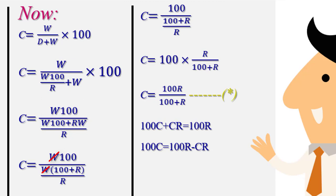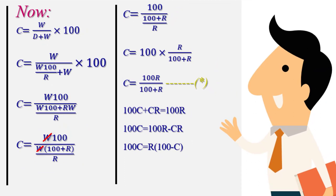Here we take R as common. 100C is equal to R. In the first bracket, 100 minus C, so R minus C equals R into that term. Therefore, 100C divided by 100 minus C equals R, which gives the relationship between moisture regain R and moisture content C.